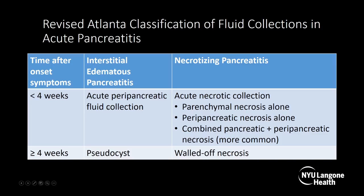If this simple fluid collection persists four weeks after onset of symptoms, it would be called a pseudocyst, and at that point you'd start to see a thin wall — again, a simple fluid collection with nothing in it. In necrotizing pancreatitis, if it's less than four weeks after symptoms and you see a collection, it has to have something in it — fat, hemorrhage, any heterogeneity that's not simple fluid — and that's called an acute necrotic collection. Remember, you can get parenchymal necrosis, peripancreatic necrosis, or both, which is most common.